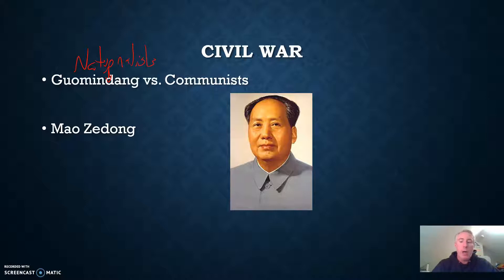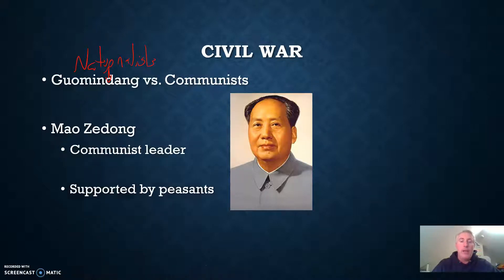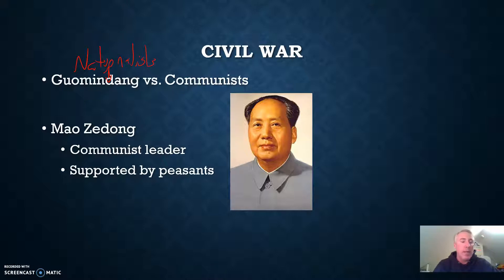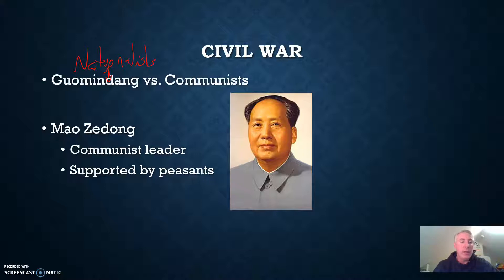Mao worked tirelessly to win the support of the peasants. He was a little different from other communist leaders. Unlike Lenin, who talked about the proletariat and the working class, Mao didn't look to the factories — he looked to the farms to gain support. He said the peasantry is the backbone of China, and if he could win their support, he'd win the whole thing. But it wasn't going to be easy. Zhang was determined to destroy Mao and his followers, and personally led the nationalist army in chasing the communists in what became known as the Long March.